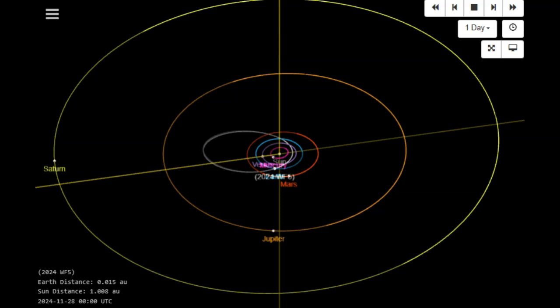JPL has just announced that we have a near-Earth object, a space rock, a meteor that might become a meteorite, inbound for tomorrow, November 29, 2024. The name of that newly discovered space rock, meteor, near-Earth object, is 2024 WF5.